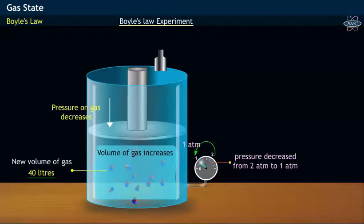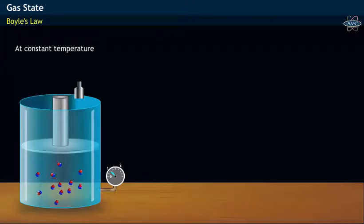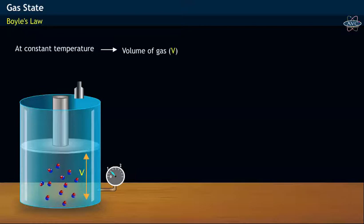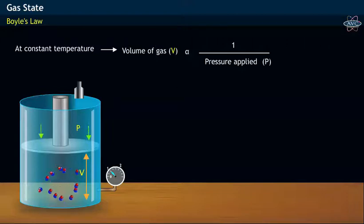From these observations, Robert Boyle concluded that at constant temperature, the volume occupied by the gas V is inversely proportional to the pressure applied. Mathematically, it may be represented as V is proportional to 1 by P, or V equals K by P.